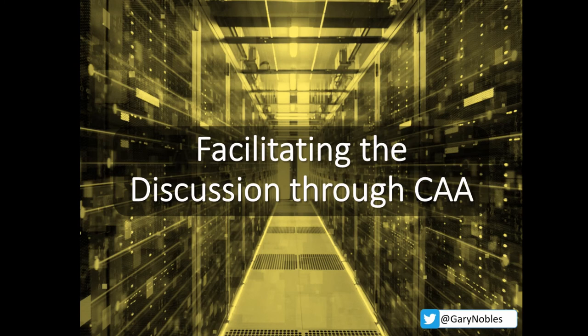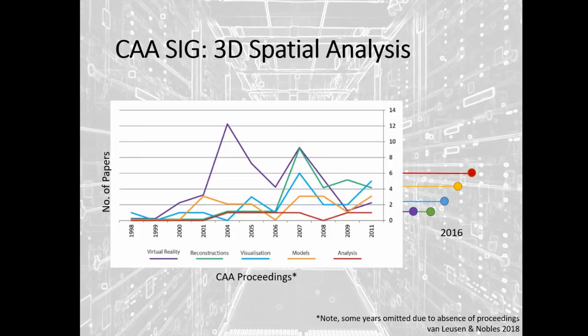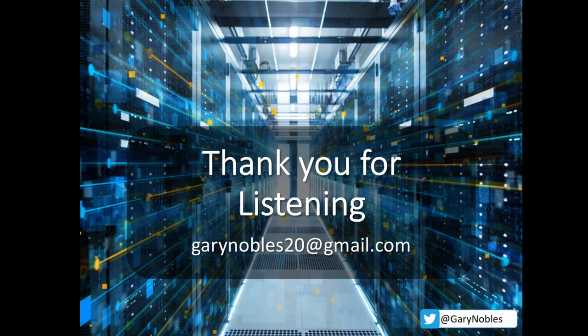To move the conversation forward, something coming up at the AGM is building a community within the CAA concentrating on 3D spatial analysis — a Special Interest Group. In a paper from 2016 and previous publications, I looked at past proceedings to gauge what 3D topics were being raised. It was clear that for spatial analysis we were lucky to get one paper per year. Looking at the latest volume, it's encouraging to see six papers now addressing 3D spatial analysis — so the future is developing in a good direction. Thank you for listening.